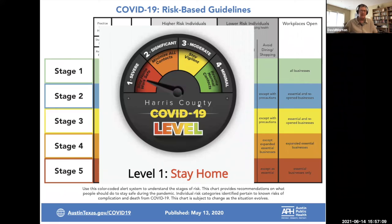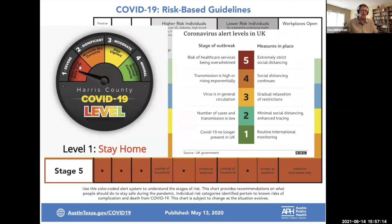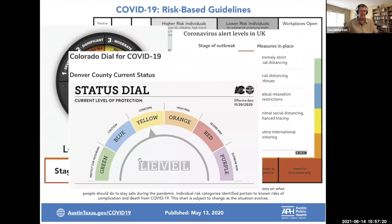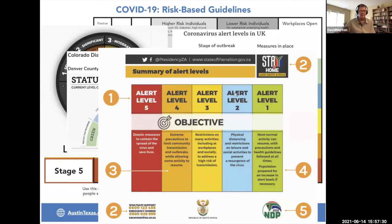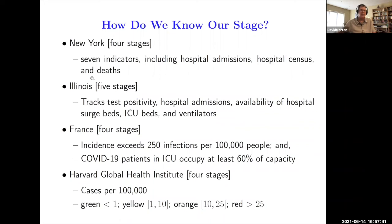These are really pervasive. Harris County is the county that includes Houston, Texas. They had a four-level alert system. This is an alert system in the U.K., the state of Colorado. We've seen four or five. They had six, kind of in the sense of Spinal Tap, they had six different alert levels. Here's an alert system from South Africa. So how do we know what our stage is, in terms of stage one, stage two, the strictest lockdown or not? New York, they use seven different indicators involving hospital admissions, hospital census deaths. The state of Illinois, track positivity, hospital admissions.